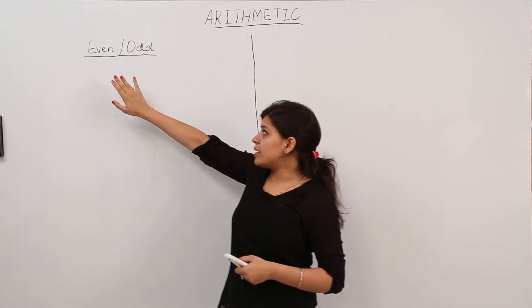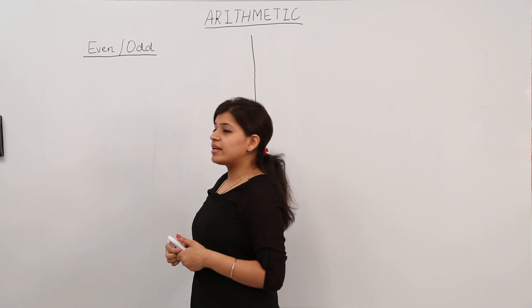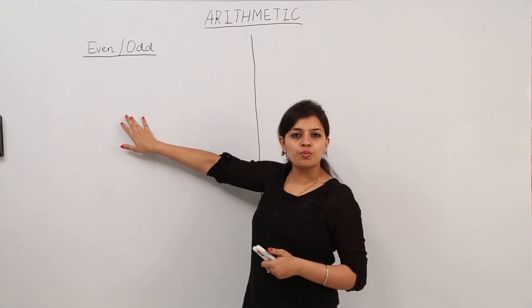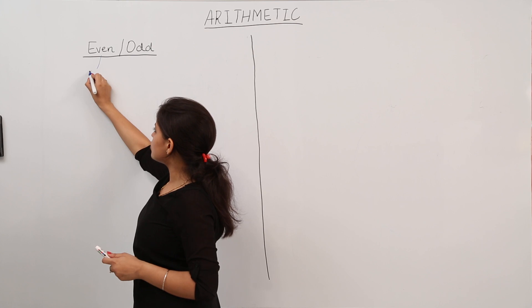Even and odd. Even numbers are those numbers which when divided by 2 leave a remainder 0. The general form of even numbers is 2n.